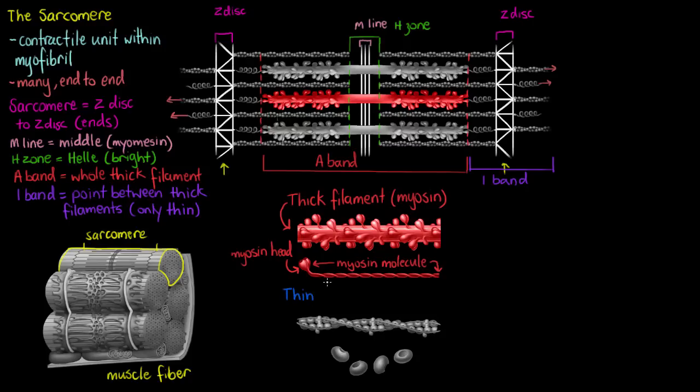And the other filament that we're going to find, the thin filament, is our actin. Now I've mentioned actin earlier in this video. So our actin is going to be this area in blue. We can see it extending almost the full length of the sarcomere on either side of that H zone. And these are the individual subunits of the actin here.